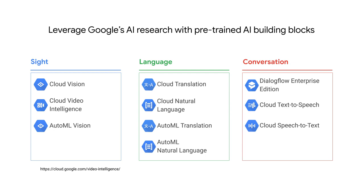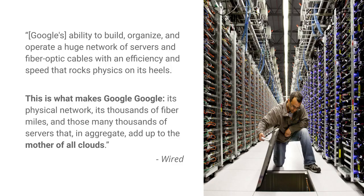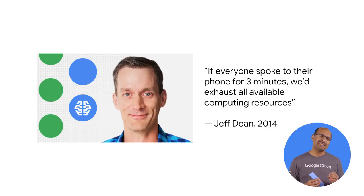Getting back to the Google Photos machine learning story, running that many sophisticated ML models on large structured and unstructured data sets for Google's own products required a massive investment in computing power. That's why Wired says this is what makes Google, Google — its physical network, its thousands of fiber miles, and those many thousands of servers that in aggregate add up to the mother of all clouds. In essence, Google has been doing distributed computing for over 10 years for its own applications and has now made that compute power available to you through Google Cloud. But simply scaling the raw number of servers in Google's data centers isn't enough.